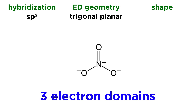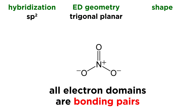Anytime we have sp2 hybridization, the electron domain geometry is trigonal planar — those are always associated. In terms of shape, we need to look at what those electron domains are. In this case, all three electron domains are bonding pairs — covalent bonds to oxygen atoms. So the shape will also be trigonal planar. Whenever all electron domains are bonding pairs, the shape matches the electron domain geometry.